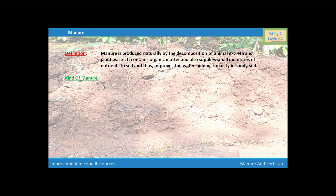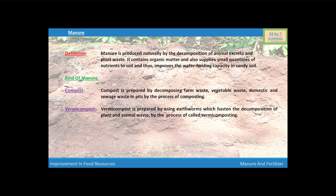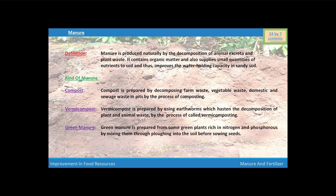Next, we are going to discuss the kinds of manure. The first one is compost. Compost is prepared by decomposing farm waste, vegetable waste, domestic and sewage waste in pits by the process of composting. The next type of manure is vermicompost, which is prepared using earthworms that hasten the decomposition of plant and animal waste by the process of vermicomposting. The third type is green manure, prepared from some green plants rich in nitrogen and phosphorus by mixing them into the soil before sowing seeds. So manure is of three types: compost, vermicompost, and green manure.